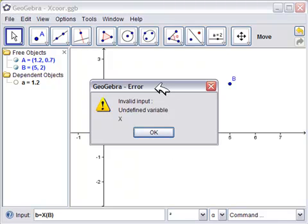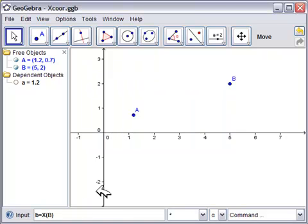We get a GeoGebra error. Invalid input, undefined variable, and this is the key, big X. So hit OK, come down here, and erase the big X, and put in a little x, and hit enter, and now we have 5, as in here.